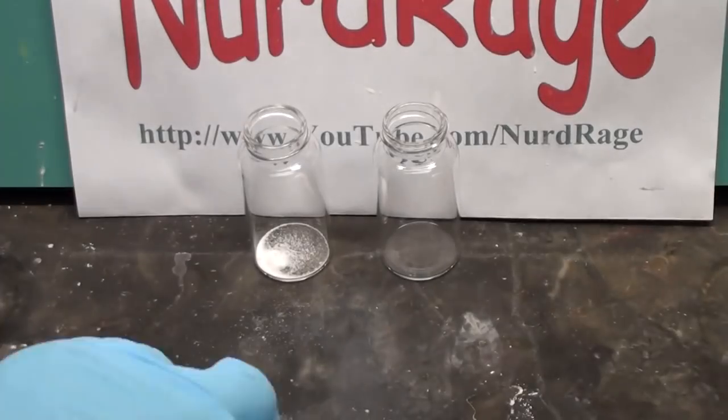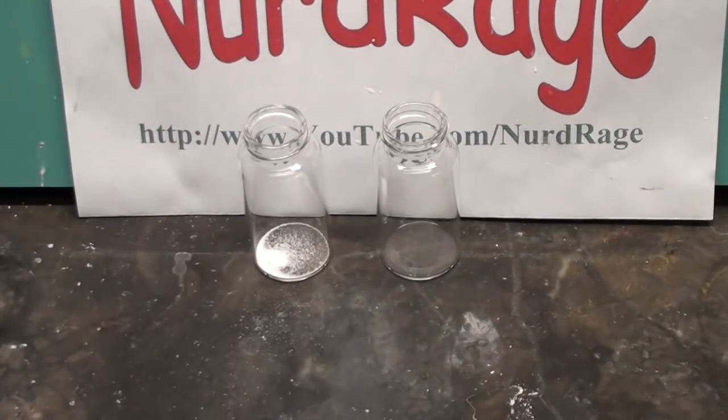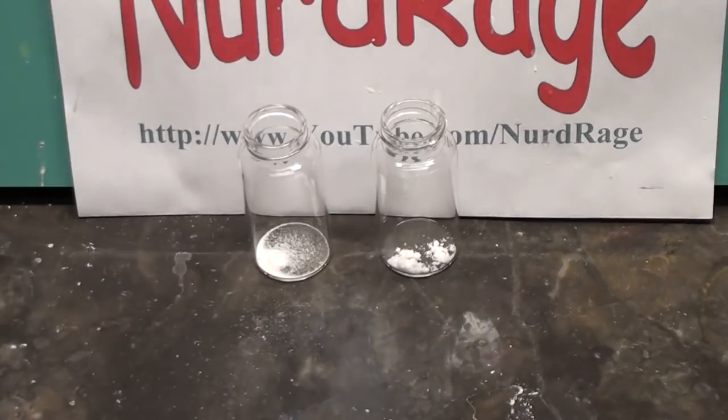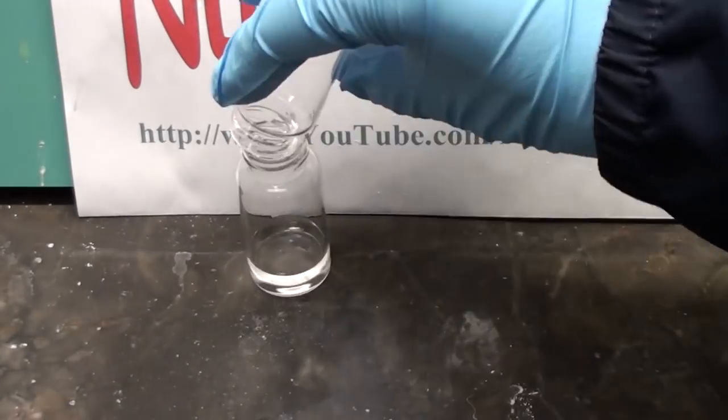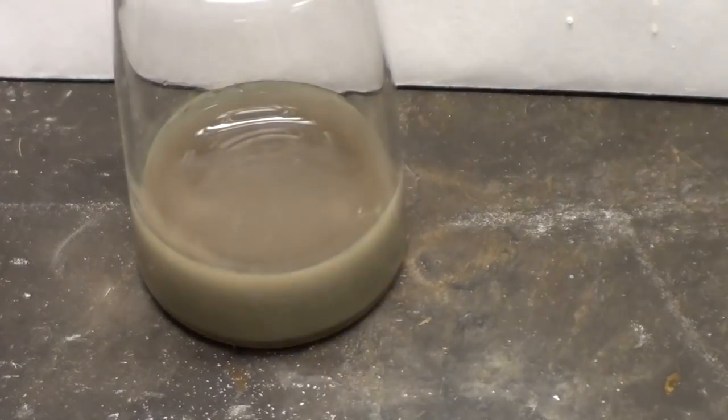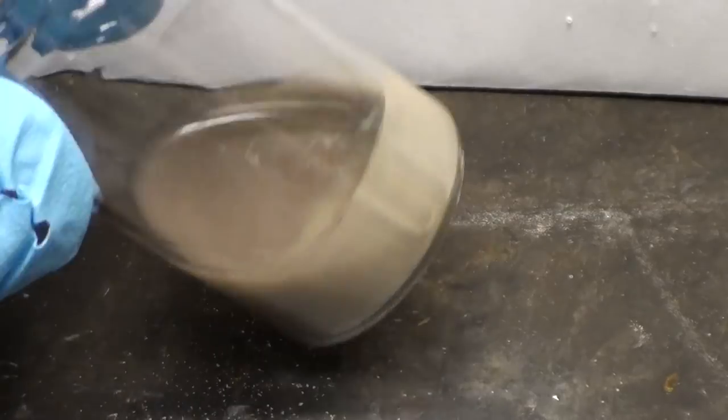To test it, put equal quantities of silver nitrate and hydrazine sulfate in separate vials. Then add just enough ammonia to completely dissolve both of them. Mix them together and after about 10 minutes a silver mirror will form on the inside of the vial.